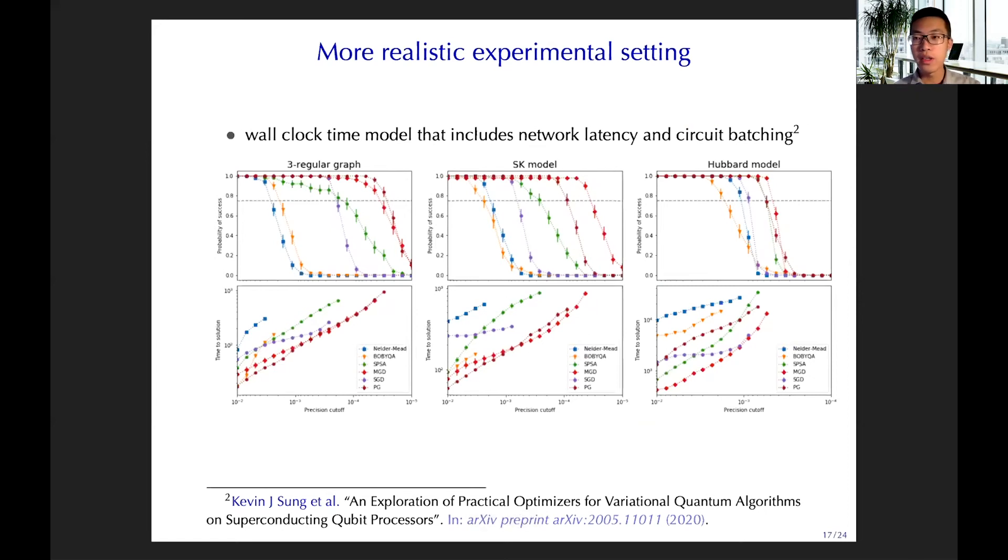We also want to see how these algorithms perform in more realistic experiment settings. So we build a cost model for the communication between classical and the quantum computer to estimate the running time on the quantum computer. And we're interested in how quickly a given optimization can reach the optimal ground state, optimal energies within a target precision. And here we introduce three different models and you can find the details in the paper. The main idea is that the PG algorithm still remains the best among different instances of examples.